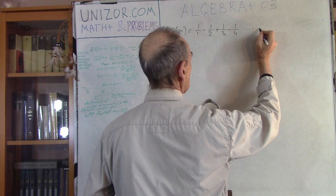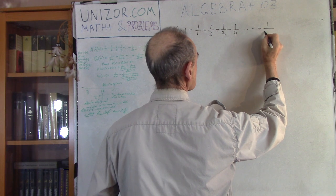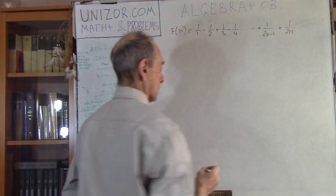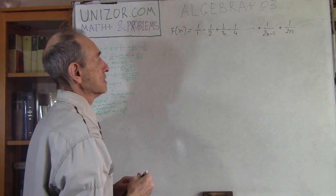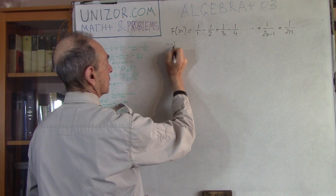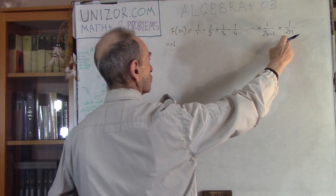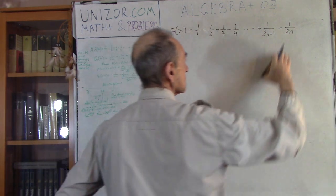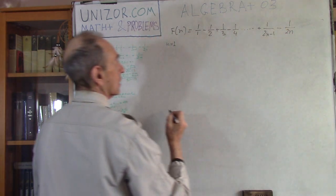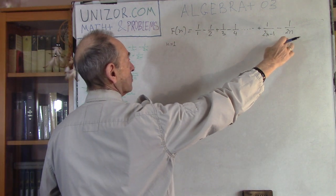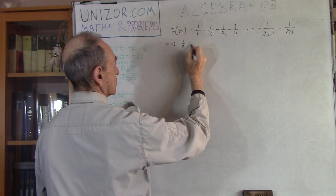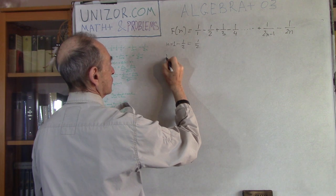Let me give you an example. For n equal to 1, the last term would be 1 minus 1/2, which is one half.